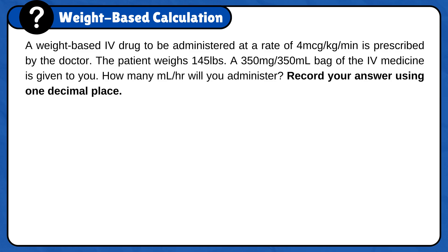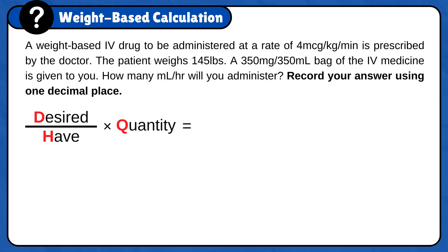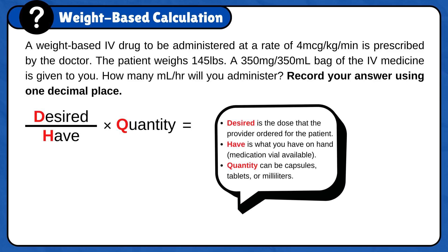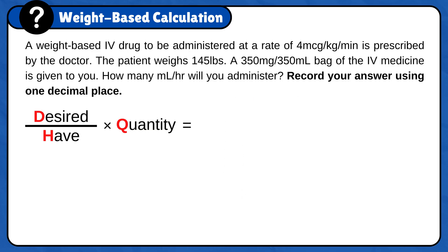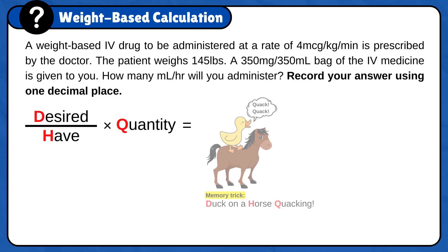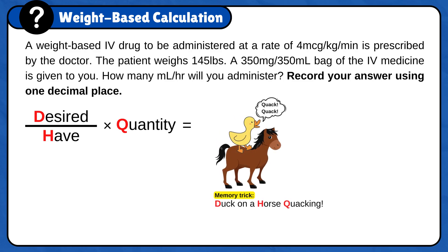First, set up the formula: desired over half times quantity. Desired is the dose that the provider ordered for the patient. Half is what you have on hand. And quantity can be capsules, tablets, or milliliters. There is a memory trick to remember this formula — just imagine a duck on a horse quacking.